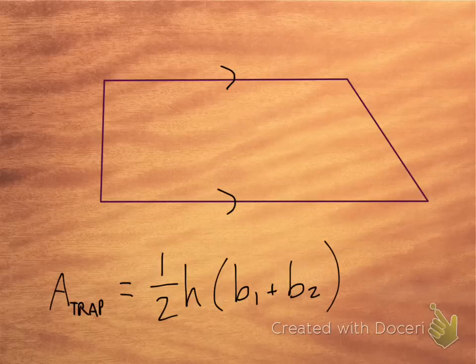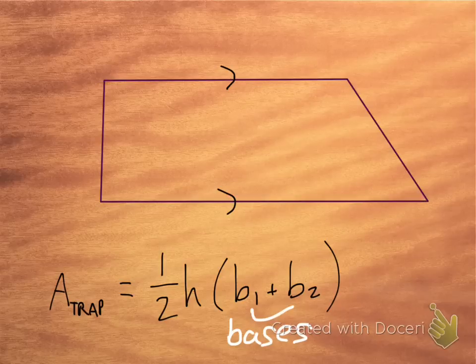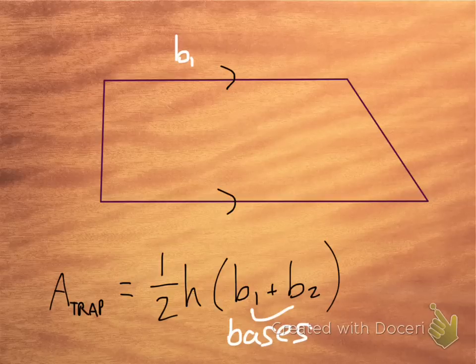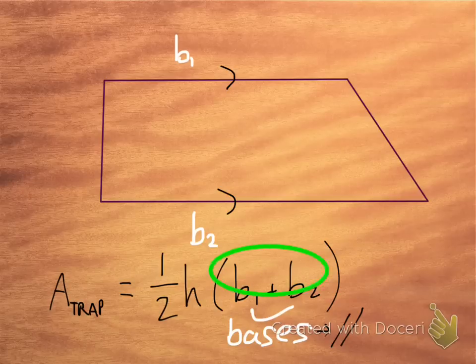b1 and b2 represent our bases. Remember, a trapezoid has two bases, and the bases are specifically the sides that are parallel to each other. I'm going to highlight them in pink here — we have one base up here and the other base is down here. We can call one of them b1 and the other b2. This top one could be b2 and this bottom one could be b1 — it really doesn't matter. The key thing is the bases are parallel. So if I know the length of those, they're just added up inside the parentheses: b1 plus b2.